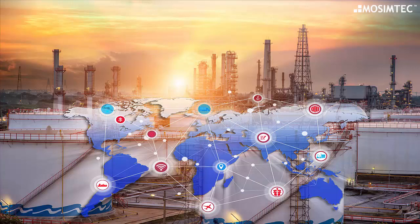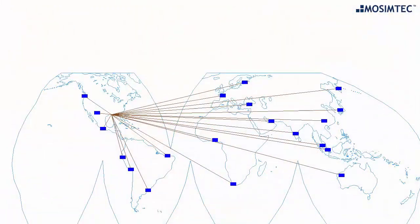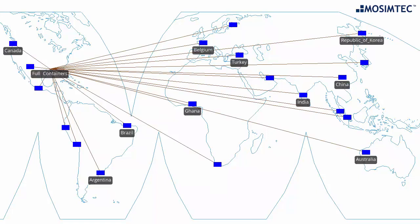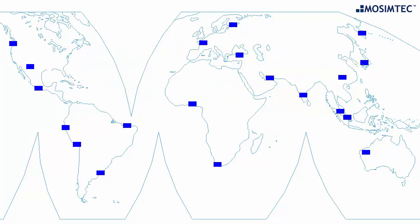A chemical manufacturer was constructing one of the largest petrochemical facilities of its kind, designed and built in a single phase. The production facility had limited space for on-site storage and produced goods that would be shipped via two ports to destinations worldwide.